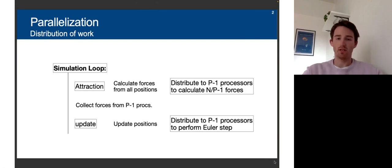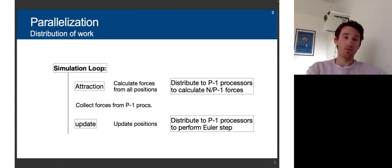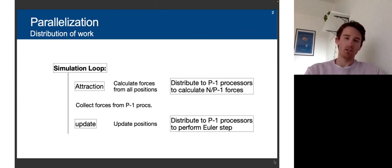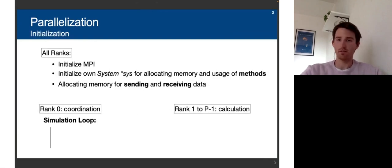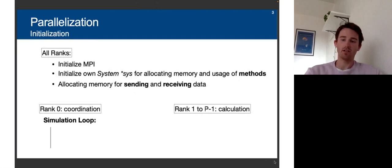We then take the update step, distribute the work on all the processors to perform the Euler step for only a certain amount of objects. For all the processors, we first initialized MPI, then initialized an own system for each processor using the class system to allocate memory and gain access to the methods — the attraction and update step methods from the sequential solution. We also allocate memory to send and receive the double arrays with all the data.